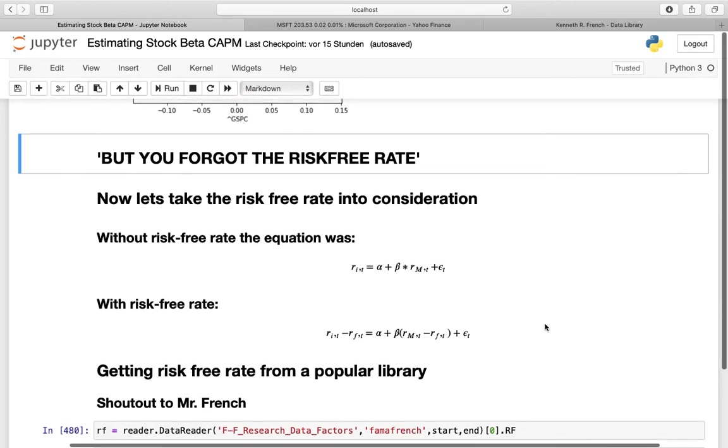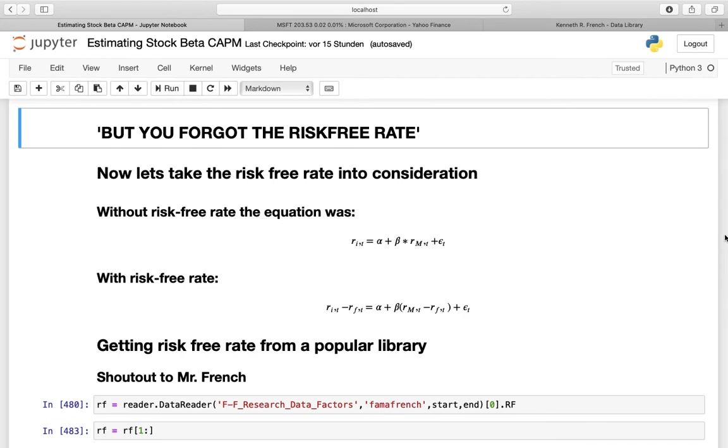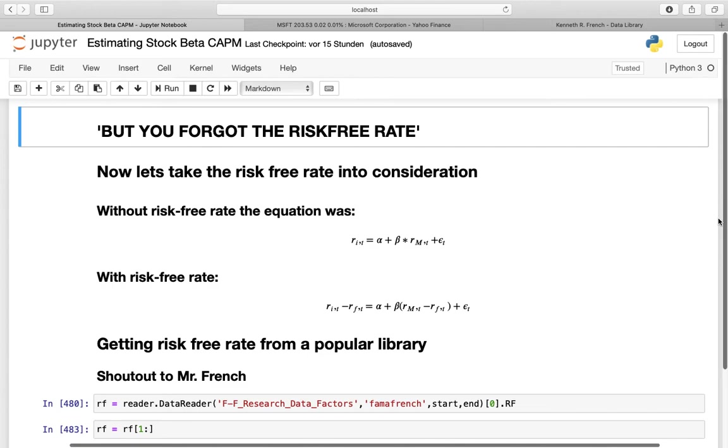So it's taking the risk-free rate into consideration. Please note that I'm just doing a quick walkthrough here and already prepared all code. Let's take a look again at the equation without the risk-free rate. We have the return of an asset equals to alpha plus beta times the market return plus the standard error. And if we want to integrate the risk-free rate, we just have to subtract it from the return of the asset and the market return. And what we are getting is this equation here. The asset return minus the risk-free rate is equal to alpha plus beta times the market return minus the risk-free rate plus the standard error.